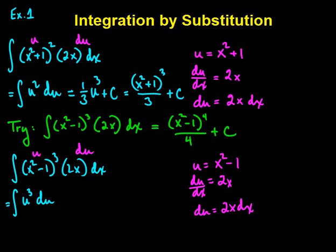To integrate, we increase and divide. We get u to the fourth over 4 plus c. Swap out the u equal to x squared minus 1. And we end up with x squared minus 1 to the fourth power over 4 plus c.